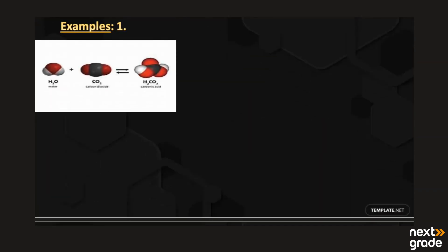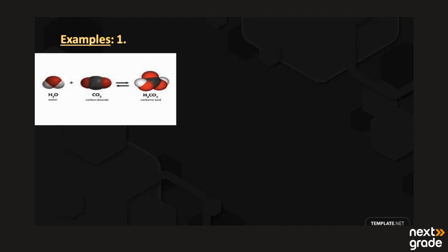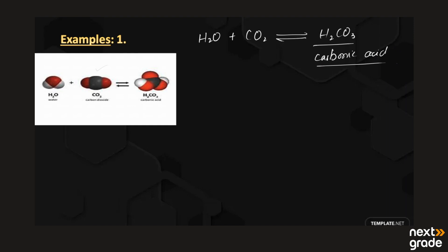Let's look at example number one. Water reacts with carbon dioxide to produce carbonic acid, H₂CO₃. To find the unit for the equilibrium constant, we first write the expression for Kc — the concentration of the products over the concentration of the reactants.